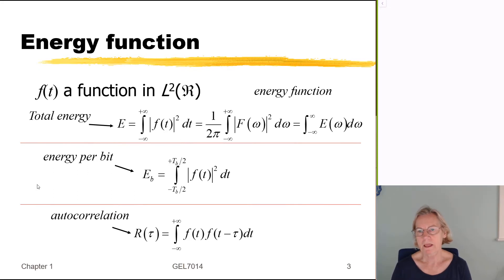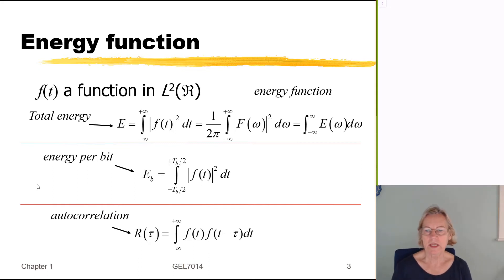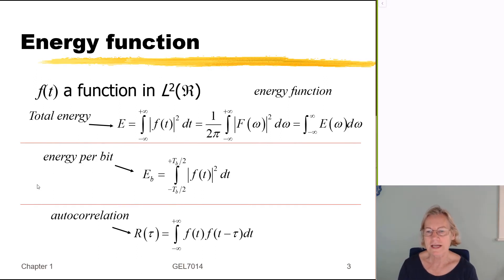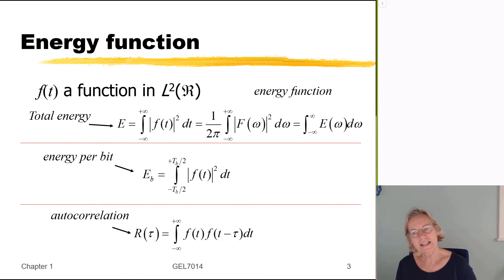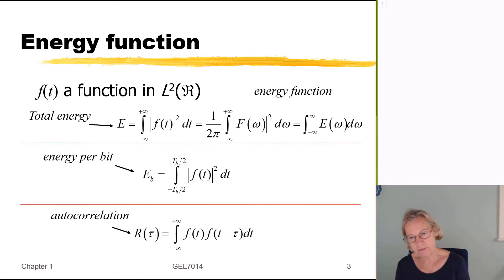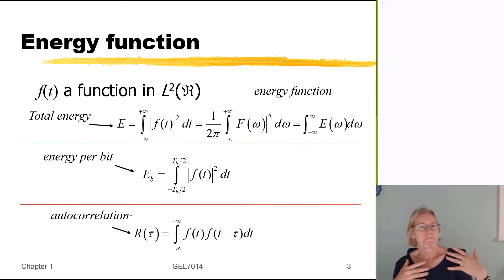Another concept we can introduce is the autocorrelation function. If I take this signal f(t), how similar is its shape to itself? We can find a quantitative value, which is the autocorrelation function. Here tau is the lag between a signal and itself — how similar is the shape when offset by some lag tau, and how far does that lag have to grow for the shape to be uncorrelated with itself.